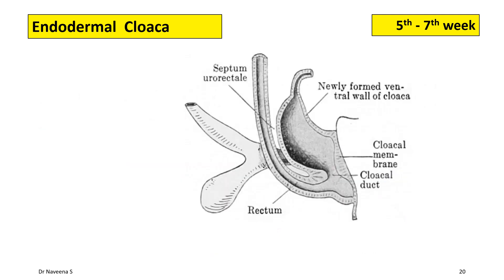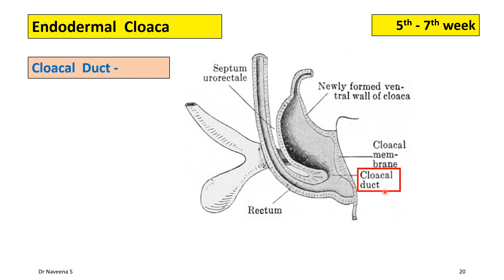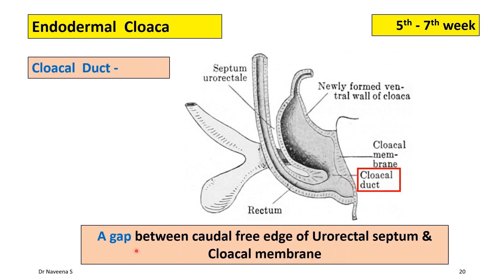Before the endodermal cloaca completely divides into two parts, its ventral part is continuous with its dorsal part through a narrow canal. During the seventh week of development, such a connecting narrow canal is called the cloacal duct, which is a gap between the caudal free margin of the urorectal septum and the cloacal membrane. This is closed by the fusion of the urorectal septum and the cloacal membrane by the end of the seventh week.